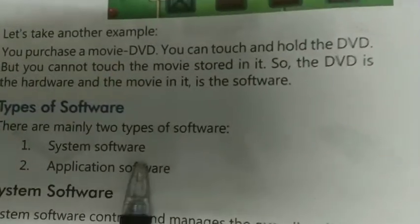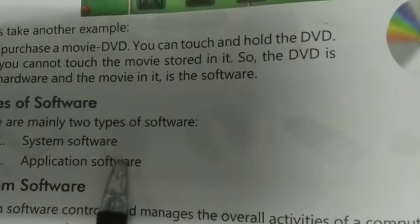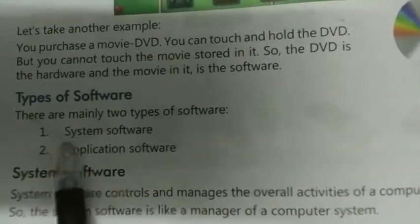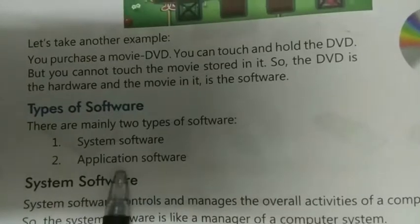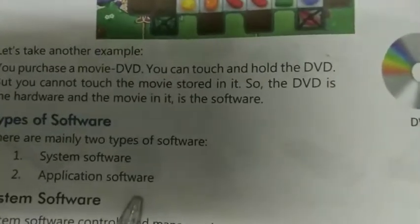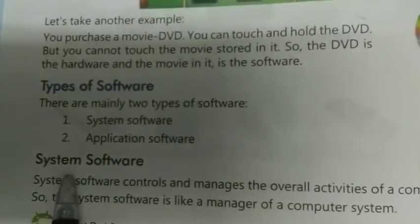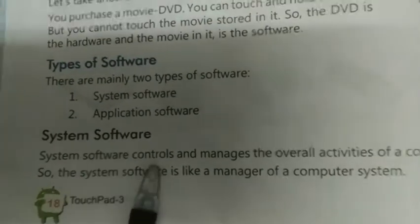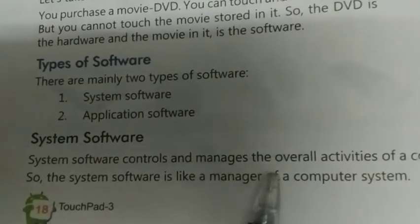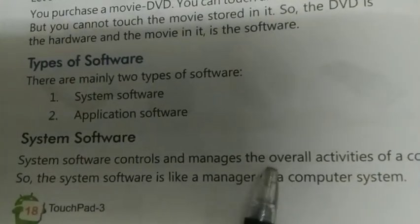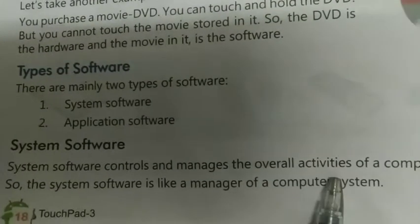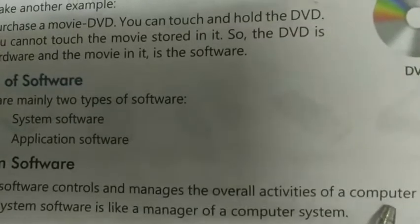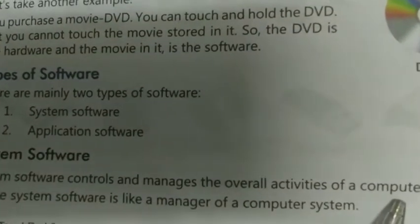Types of software — software के प्रकार। There are mainly two types of software। Software मुख्यतः दो प्रकार के होते हैं: first, system software; second, application software। System software controls and manages the overall activities of a computer system।